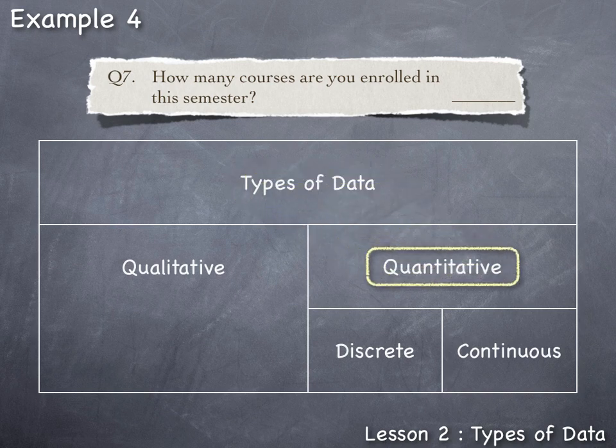But quantitative data can be further classified as being discrete or continuous. So when it comes to the number of courses a student is enrolled in, they're either enrolled in one, two, or three courses, no in between. That is, it's all or nothing. You're either enrolled in the class or you're not.